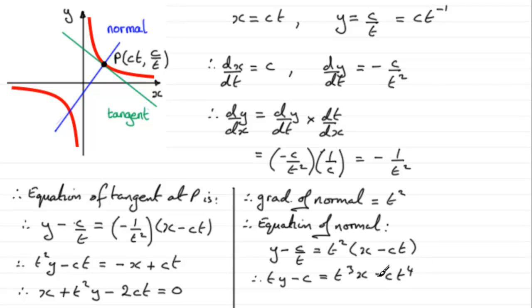And I could rearrange this if I subtract ty and add c to both sides. I therefore have t cubed x minus ty. And then I'm going to have plus c minus ct to the power 4. So I could factorize that. I could pull out plus c as a common factor and have 1 minus t to the power 4. And this would equal 0.